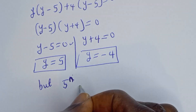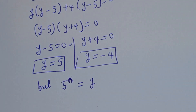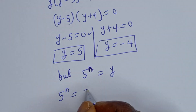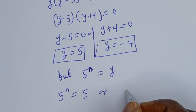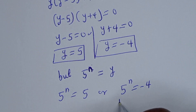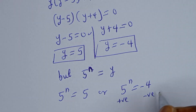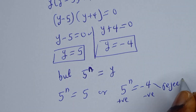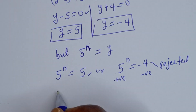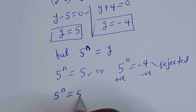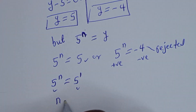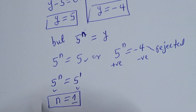But 5 to the power of n is equal to y. So 5 to the power of n is equal to 5, or 5 to the power of n is equal to minus 4. Since 5 to the power of n is always positive and minus 4 is negative, the second case is rejected. Therefore we consider 5 to the power of n is equal to 5, which is 5 raised to power 1. Because of the same base 5, n is equal to 1. This is the final answer.